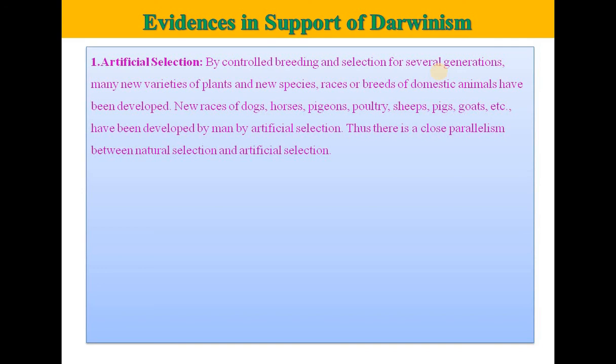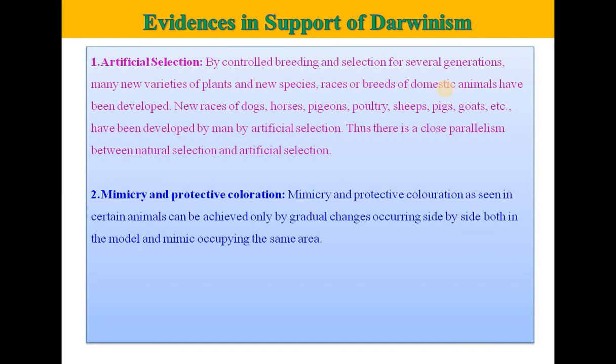What are the main evidences which support Darwinism? The first is artificial selection. By controlled breeding and selection for several generations, many new varieties of plants and new species, races, or breeds of domestic animals have been developed — new races of dogs, horses, pigeons, poultry, sheep, pigs, goats, etc. have been developed by man through artificial selection. There is a close parallelism between natural selection and artificial selection, and it proves to be major evidence in support of Darwinism.